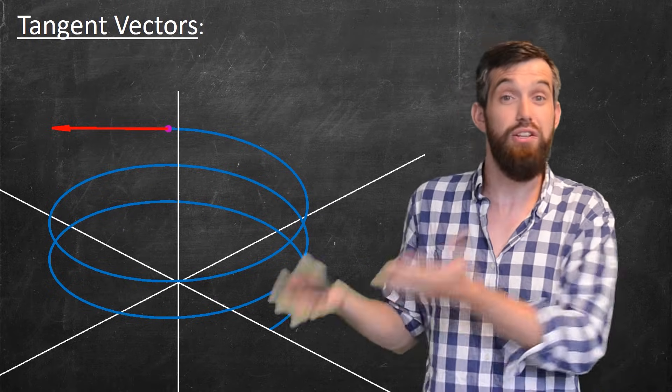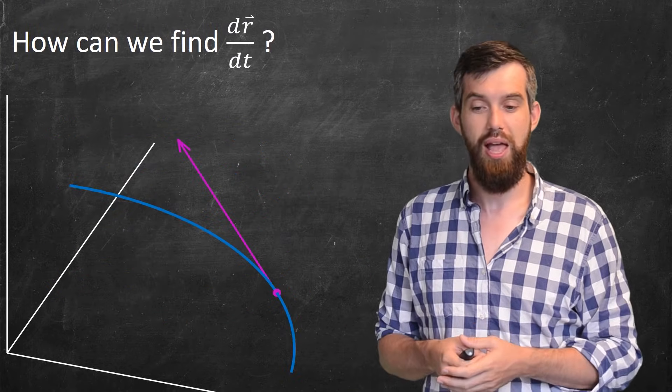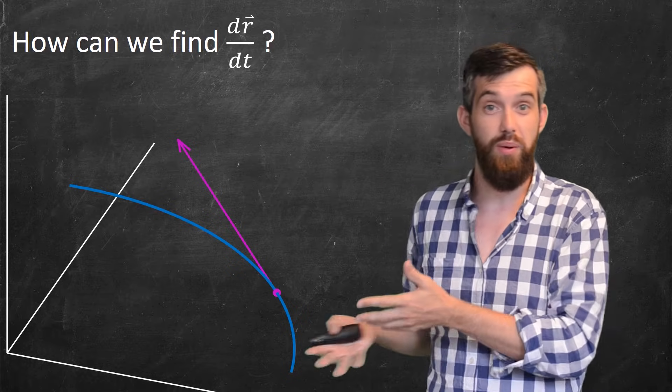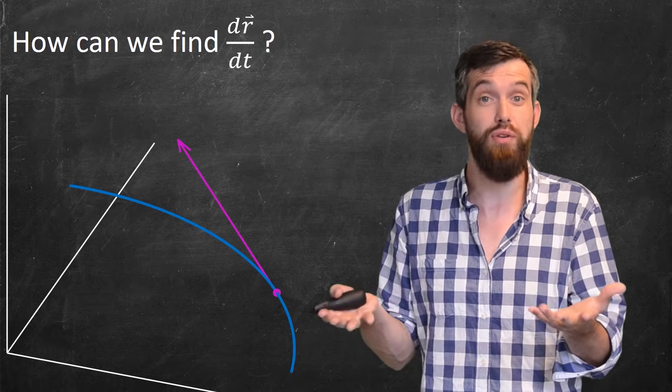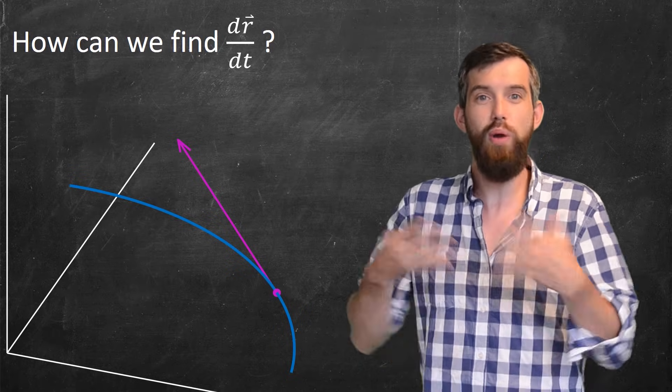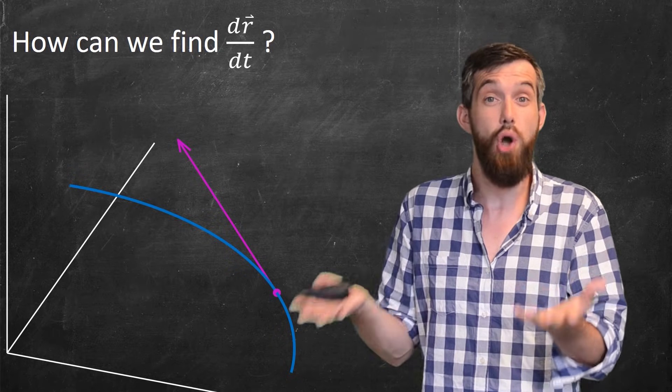I'm going to again work with the analogy of what we did with single variable functions. So my goal is to find a derivative. You'll recall that in single variable calculus, the slope of a curve was given by the derivative of the function. So I want to find the derivative of this vector r. So I want to find dr dt.